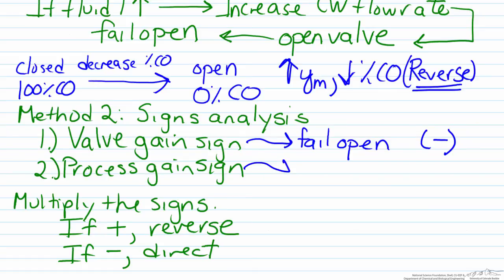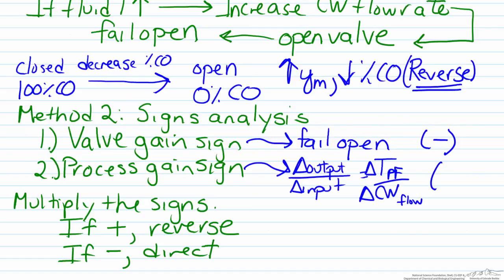For our process gain, remember that the gain of a process is the delta output over delta input. Here the value of the output variable, the variable we are trying to measure, is the temperature of the process fluid. We are trying to adjust that by altering the flow rate of the cooling water. If I increase the flow rate of the cooling water, that is going to cause a decrease in the temperature of the process fluid. Therefore, the process gain is negative.